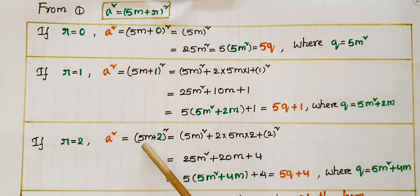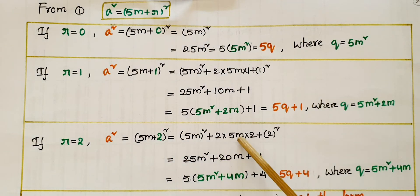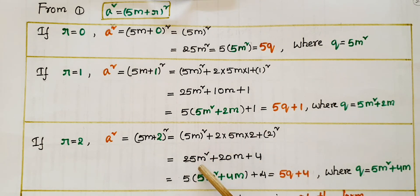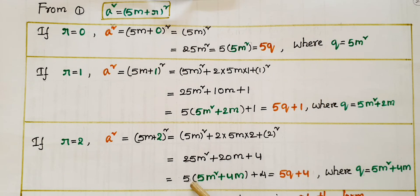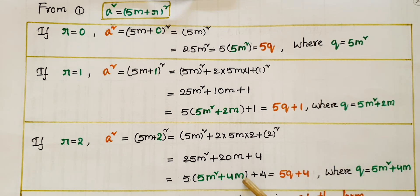If r is equal to 2, a squared equals (5m plus 2) whole square. This is also in the form of (a plus b) whole square: (5m) squared plus 2 into 5m into 2 plus 2 squared, which equals 25m squared plus 20m plus 4. Taking out 5: 5 into (5m squared plus 4m) plus 4, which is 5q plus 4, where q is equal to 5m squared plus 4m.